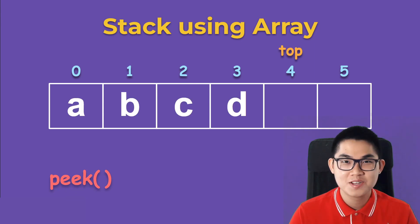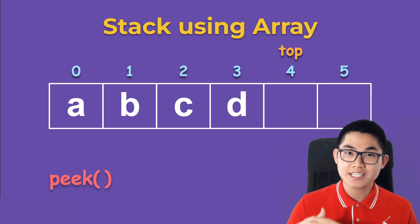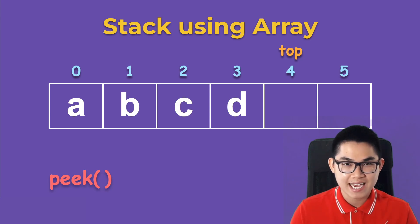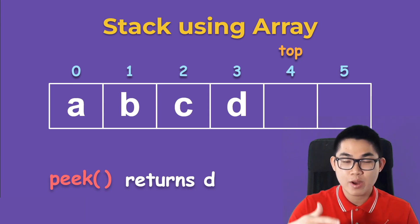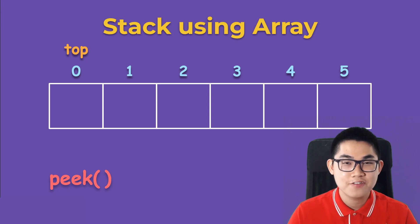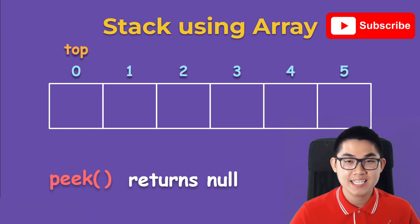We've covered push and pop. There's one more function called peek. Peek means you look into the box and see what is on top of the stack — in this case it would return D. Peek does not add to or remove from the stack; it just gets whatever is on top. If you try to peek when the stack is empty, peek just returns null.